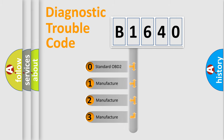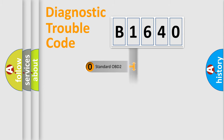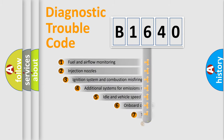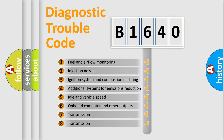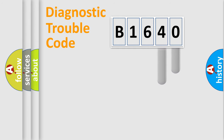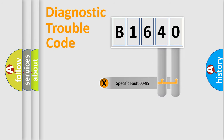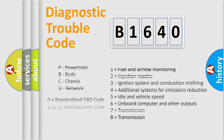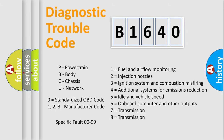If the second character is expressed as zero, it is a standardized error. In the case of numbers 1, 2, or 3, it is a manufacturer-specific error expression. The third character specifies a subset of errors. This distribution is valid only for the standardized DTC code. Only the last two characters define the specific fault of the group, and this division is valid only if the second character is zero.